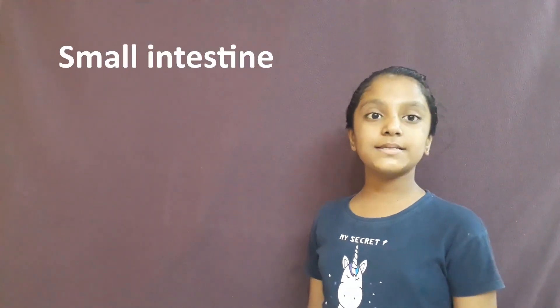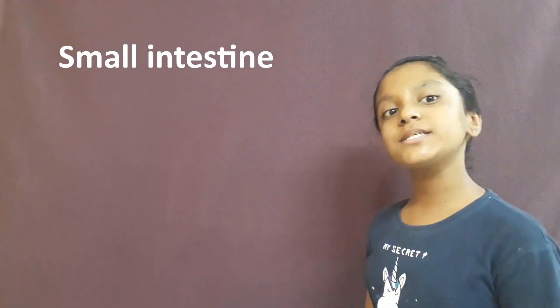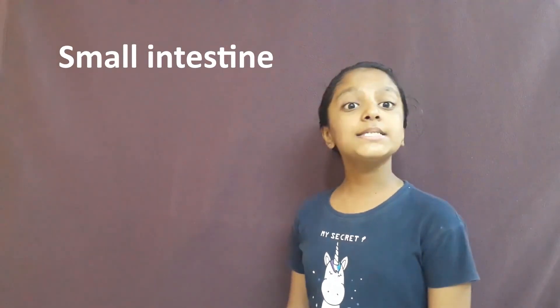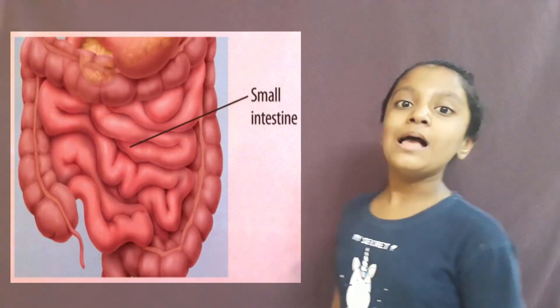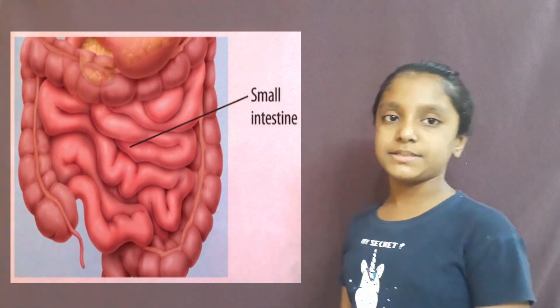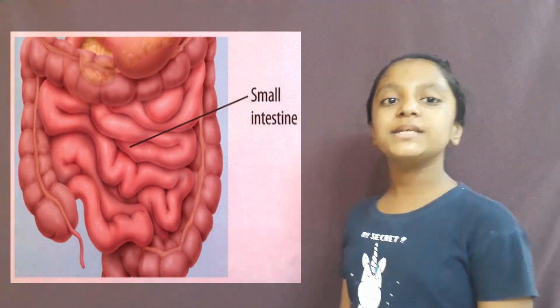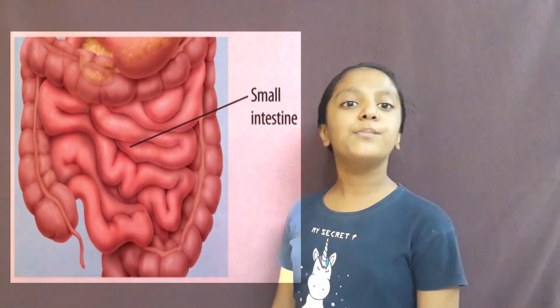Now the food enters the small intestine. Small intestine is also called small bowel. It is about 20 feet long and about an inch in diameter. Diameter means a line passing from side to side of a body.